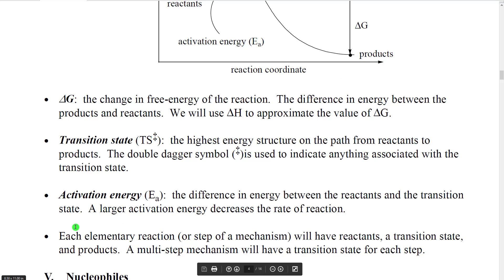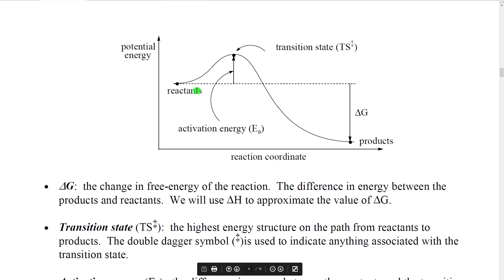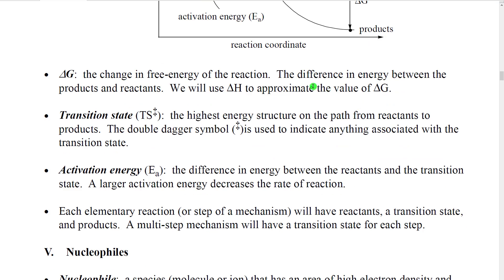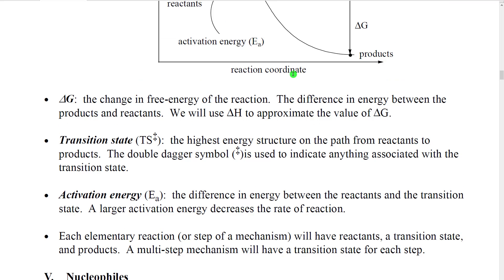When we look at a multi-step reaction mechanism, each elementary reaction will have reactants, a transition state, and a product. So a multi-step mechanism is going to have a transition state, in other words, a hill, for every elementary reaction. That's one of the ways that we would be able to know that there were multiple elementary reactions.